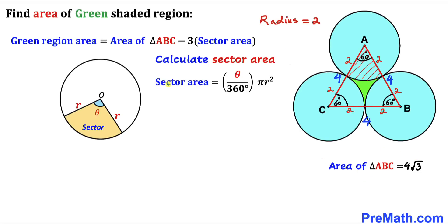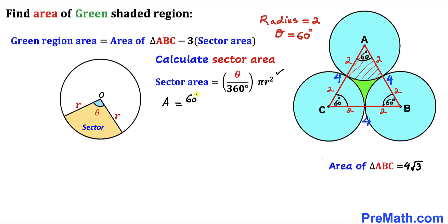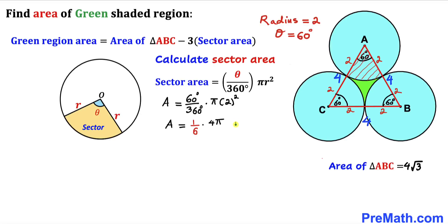Let's calculate the sector area using the formula: sector area equals theta divided by 360 degrees times pi r squared. Our angle theta is 60 degrees, as seen at each vertex of the equilateral triangle, and our radius r is 2. So sector area equals 60 over 360 times pi times 2 squared. That simplifies to one sixth times pi times 4, giving a sector area of 2 pi divided by 3.